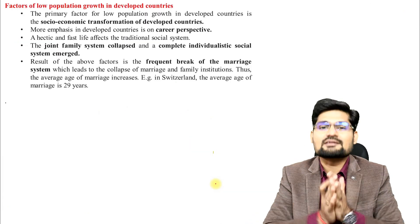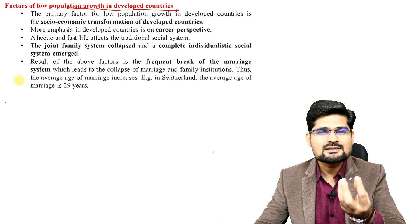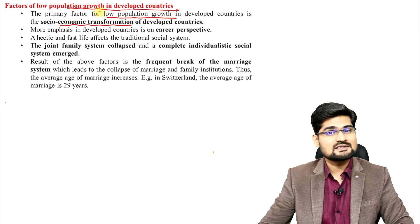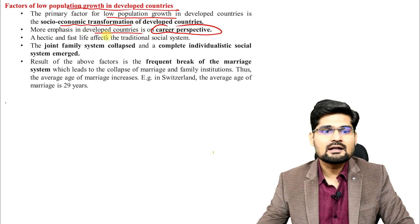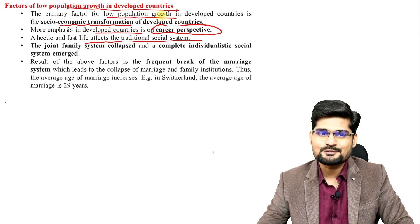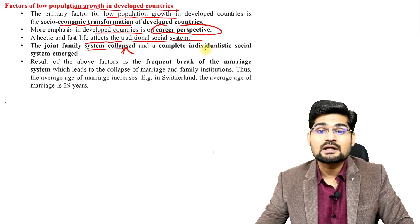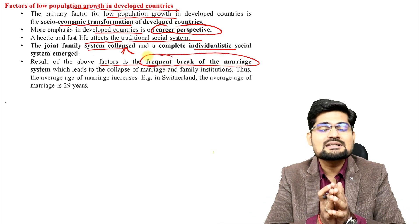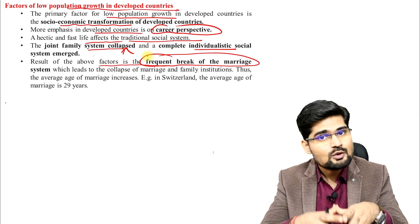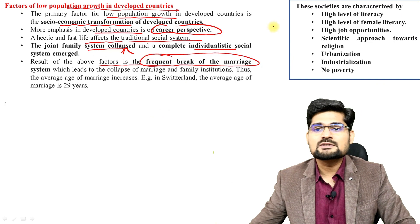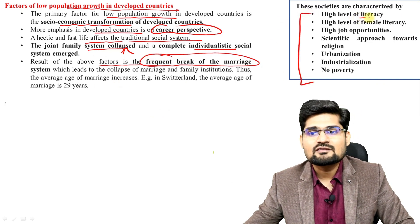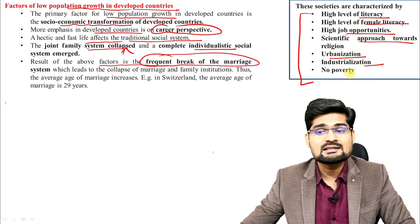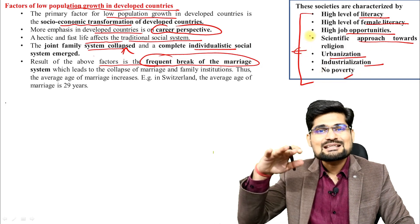The primary factor for low population growth in developed countries is the socio-economic transformation of these countries. More emphasis is on career perspective; the hectic and fast life affects the traditional social system; the joint family system has collapsed and societies have become more individualistic. The result of all these factors is frequent break of the marriage system, causing very slow progress in population growth and also negative growth at many places.